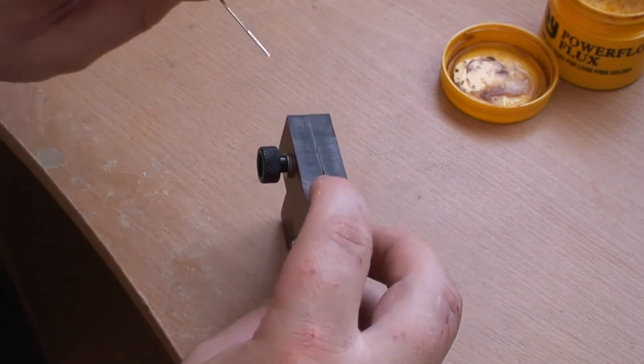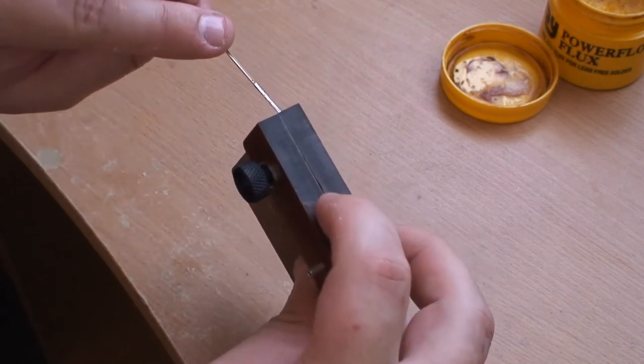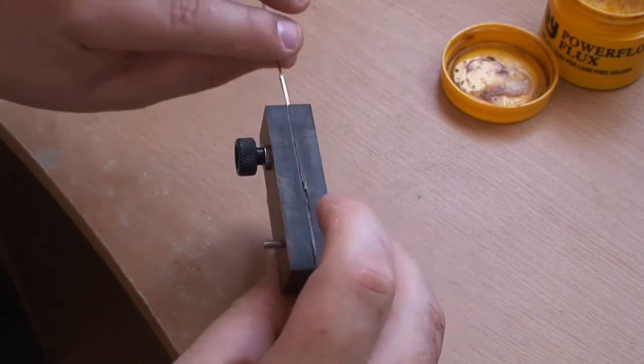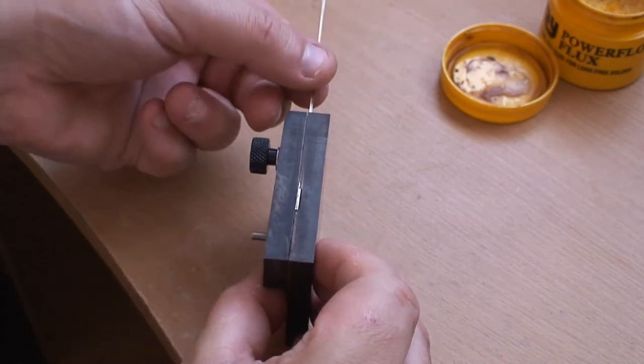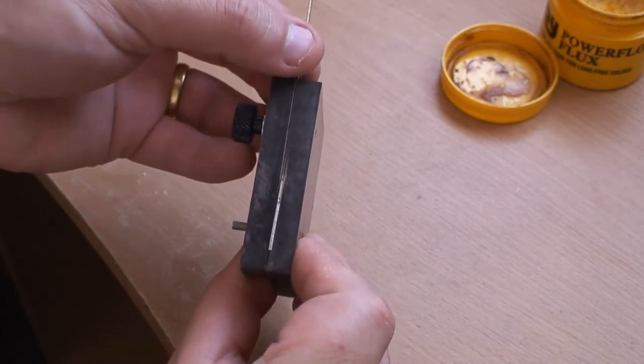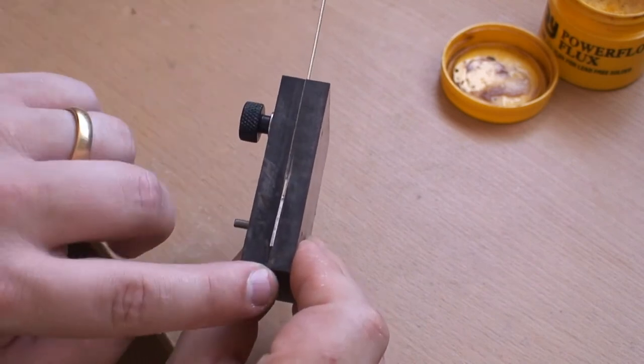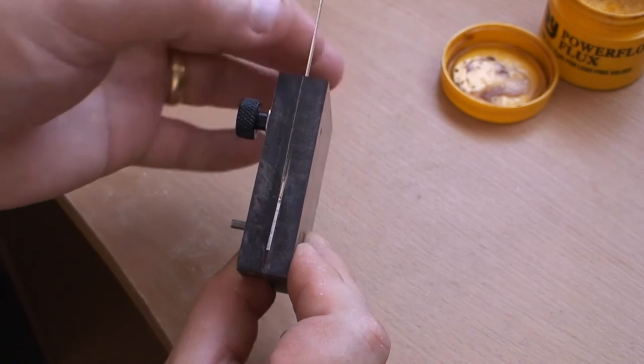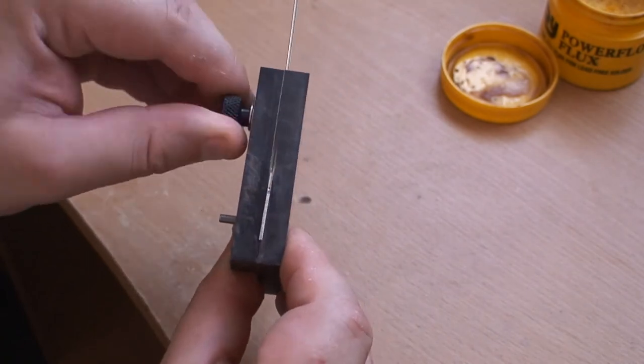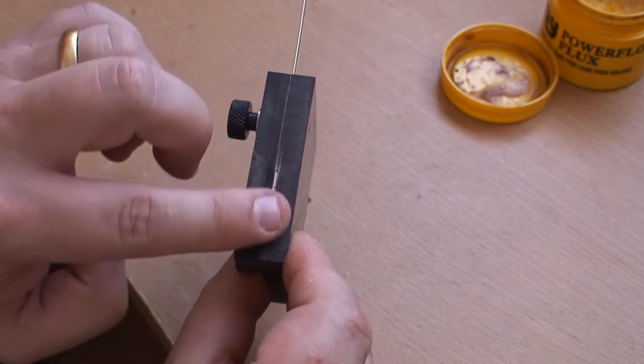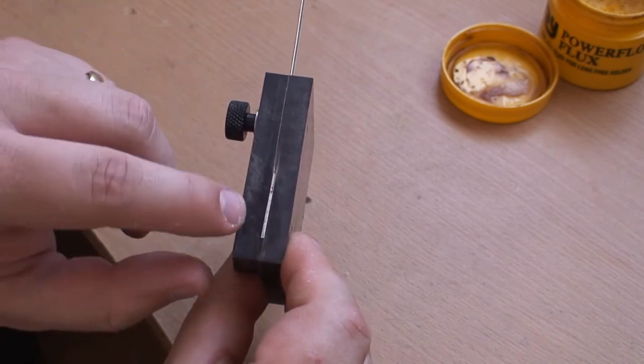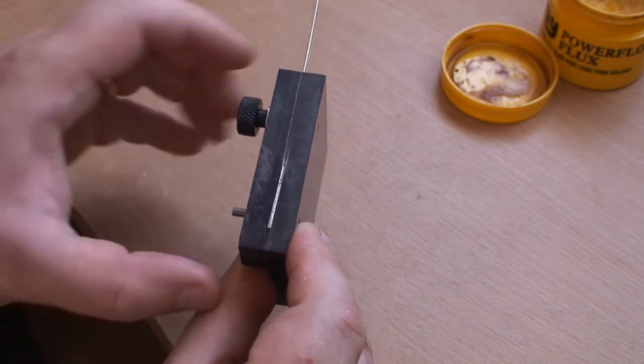So what I actually do now is insert the rail back in the other way round, so that you are filing the solder side. Tighten it down. You don't have to go all the way to the end. Just about there. And what this is going to do is just take off a little bit of the solder side so you get a nice, sharp blade. And I've found this works very, very well.